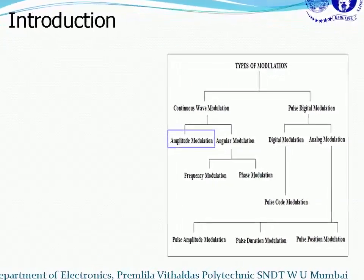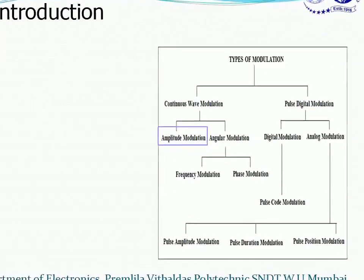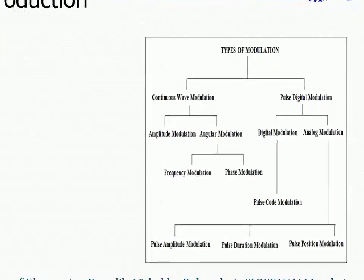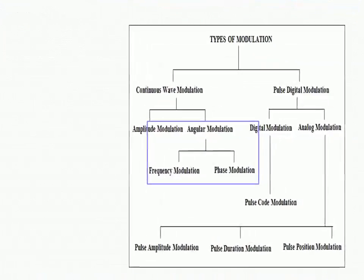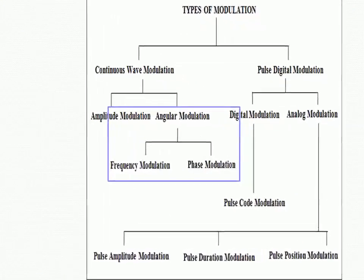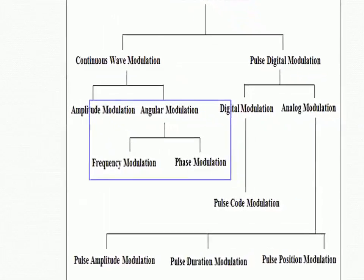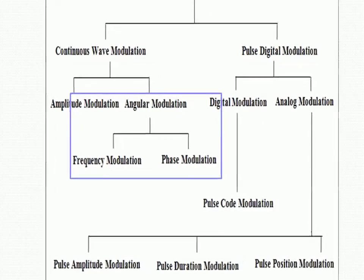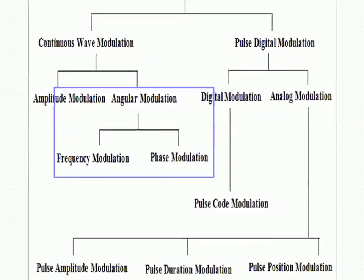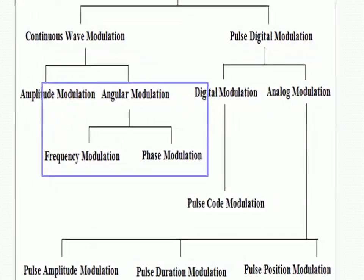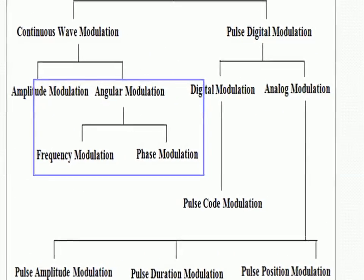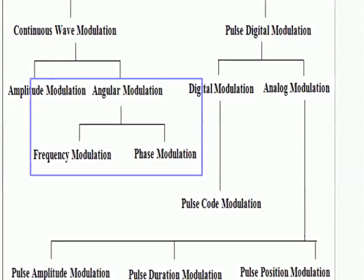If you vary the angle, then it will be angle modulation. Angle modulation has two parts: one involves frequency and the other involves phase, so it will be either frequency modulation or phase modulation.